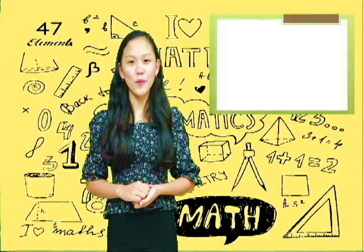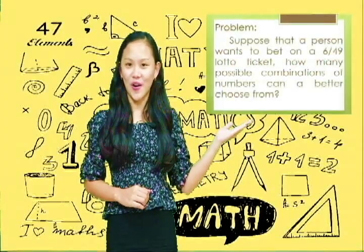Now let's go back to the problem presented earlier. Here's the solution. Lotto 6/49 implies that 6 numbers are drawn from a set of 49. So we have n is equal to 49 and r is equal to 6. Using the formula, by substitution...